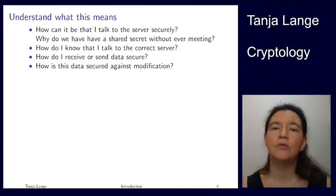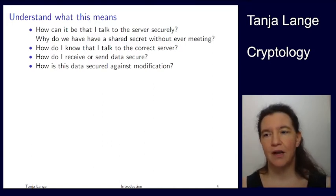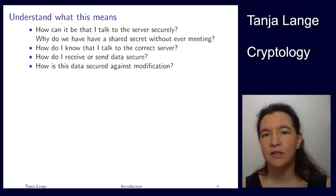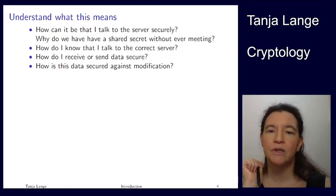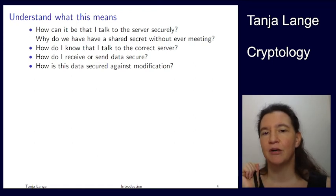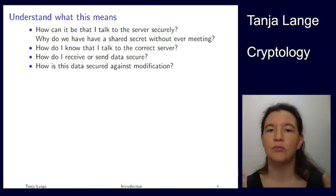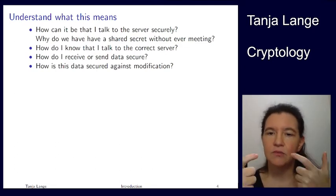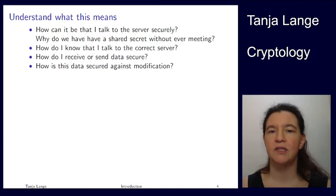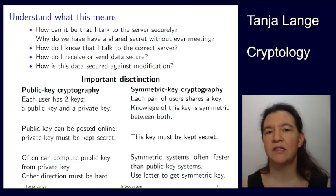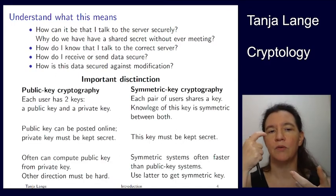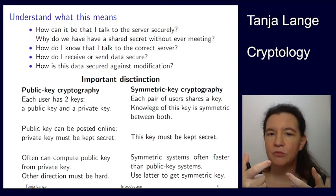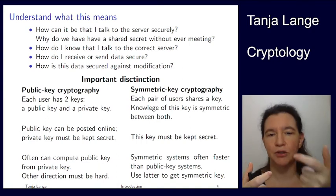When sending important information like a credit card number, you're relying on it to be transmitted securely but also unmodified. It would be a disaster if an attacker could change your payment of 10 euros to a thousand euros. So how is it secured against modification? Roughly, there are two categories in cryptography: public key cryptography and symmetric key cryptography.